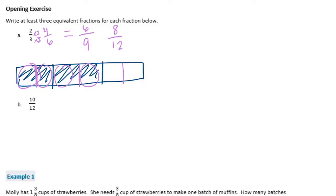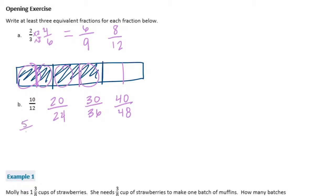For ten-twelfths, we can do the same thing. Multiply by two over two: ten times two is twenty, twelve times two is twenty-four — so twenty-twenty-fourths. Multiply by three: ten times three is thirty, twelve times three is thirty-six. Multiply by four: ten times four is forty, twelve times four is forty-eight. So there are three equivalent fractions. We also could have reduced it, because we can divide both ten and twelve by two and get five-sixths.